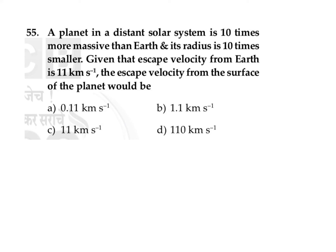This question states that a planet in a distant solar system is 10 times more massive than Earth, and its radius is 10 times smaller. Given that the escape velocity from Earth is 11 kilometers per second, we need to find the escape velocity from the surface of that planet.